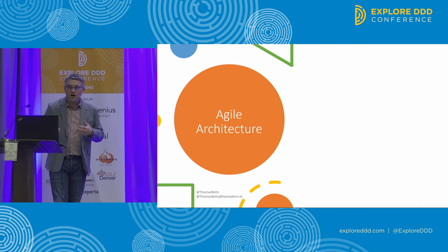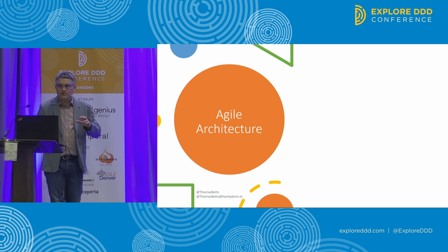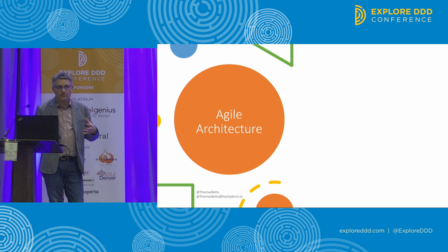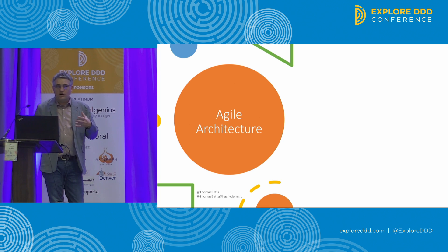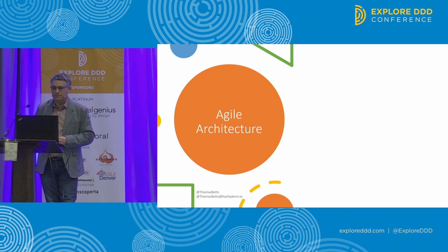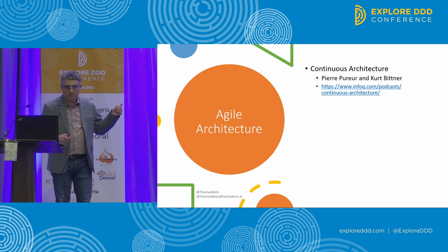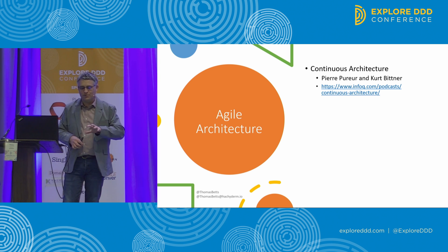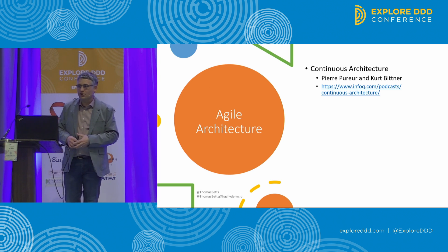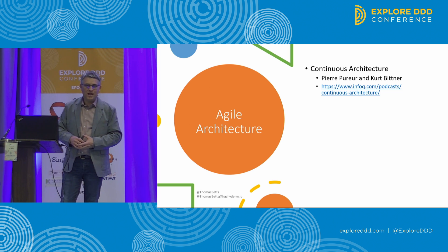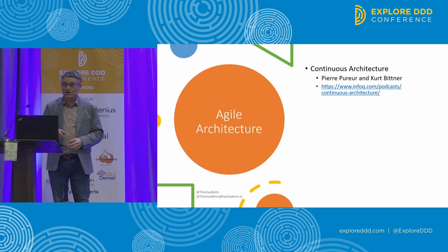We spent decades trying to make software development more agile, and architecture has been playing catch-up. Some of the ideas about how to do this come from the book Continuous Architecture and Continuous Architecture in Practice by Pierre Pureur and a few others. They started writing an article series on InfoQ that's now over a year old. They run a podcast — I think it just went live recently.